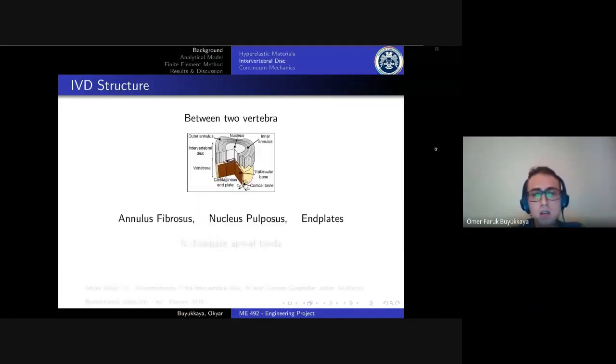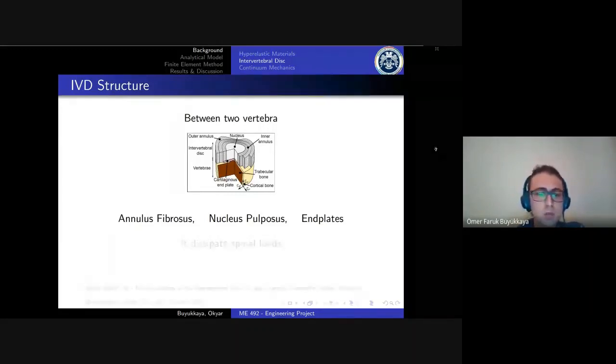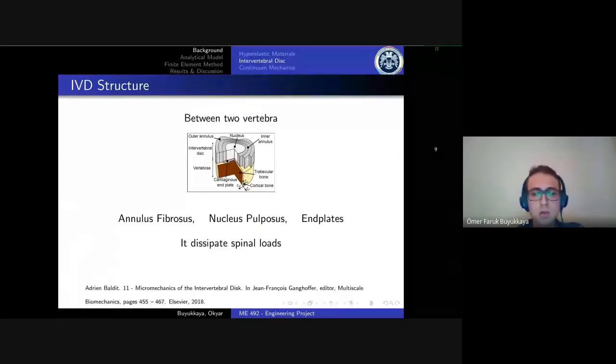Intervertebral disc is a component of human spine which is placed between two vertebrae, comprised of annulus fibrosus which is a composite hyperelastic tube and nucleus pulposus which is a jelly liquid and cartilaginous end plates. Its duty is to dissipate spinal loads acting on the spine.